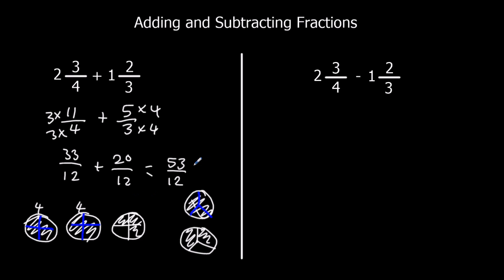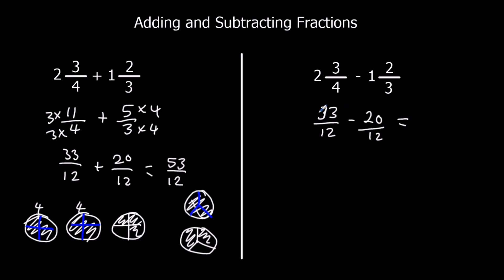53 twelfths. I could convert that back to a mixed number, or I could leave it as a top-heavy fraction — I'm going to leave it top-heavy. And for the subtraction with the same numbers: I've got 33 twelfths take away 20 twelfths — 33 take away 20 is 13, and they're still twelfths.